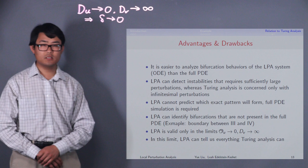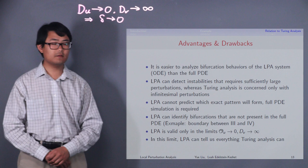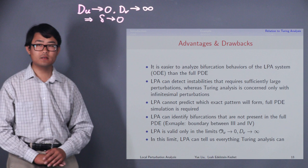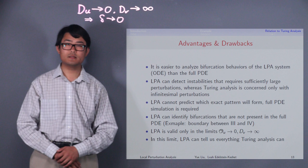Let us talk about the advantages and disadvantages of LPA. It is easier to analyze bifurcation behaviors of the LPA system, which is an ODE, than the full PDE. LPA can detect instabilities that require sufficiently large perturbations, whereas Turing analysis is concerned only with infinitesimal perturbations.